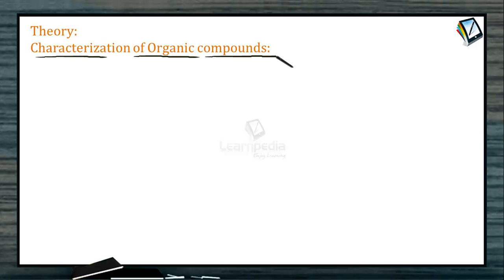After purifying the compounds, you have to find out the percentages of elements which are involved in the organic compound. After finding the elements and their percentages, we have to find out the molecular formula of the organic compound. Various steps are involved in the characterization of an organic compound.